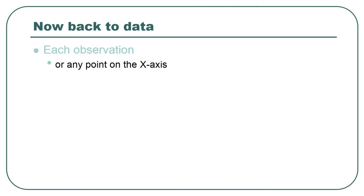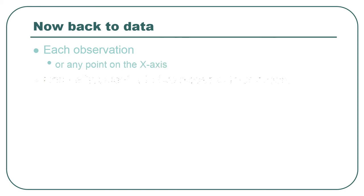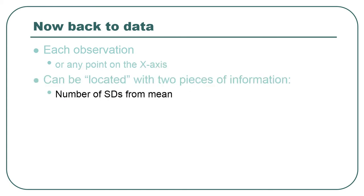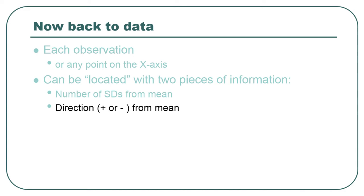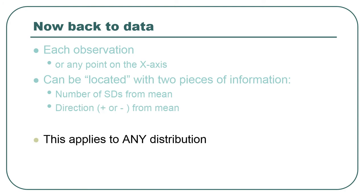Going back to the data: each observation, or any point on the x-axis — so a mean, for instance, which is an abstract point on the x-axis — can be located with two pieces of information: the number of standard deviations it is away from the mean, and the direction from the mean. Just like navigating from the metro station — three blocks, which direction? South. Well, I know exactly how to get there. You can do that with z-scores too. Z-scores help you locate things.